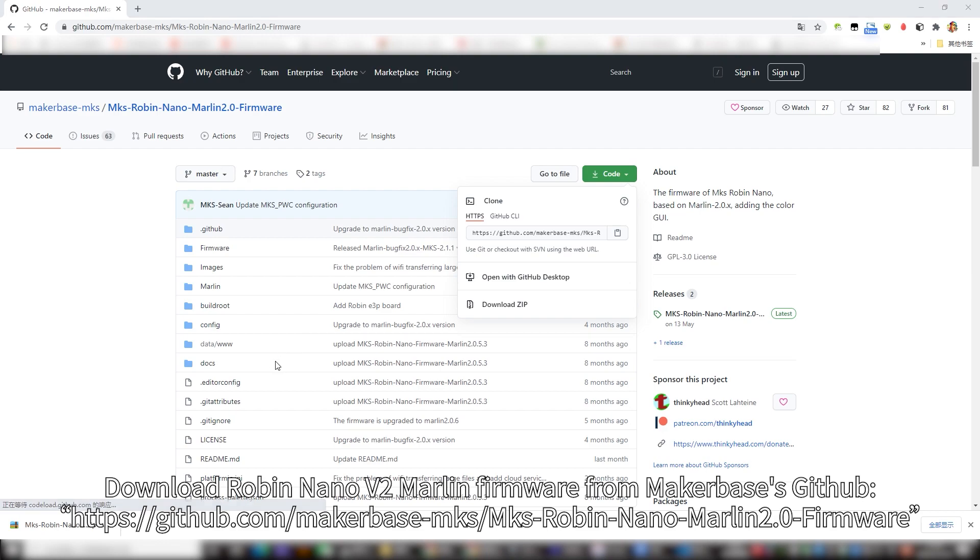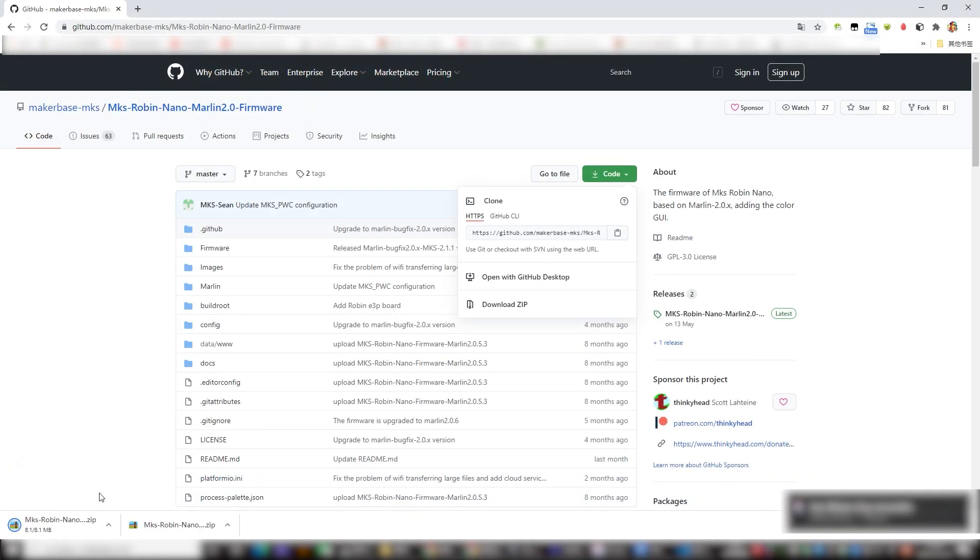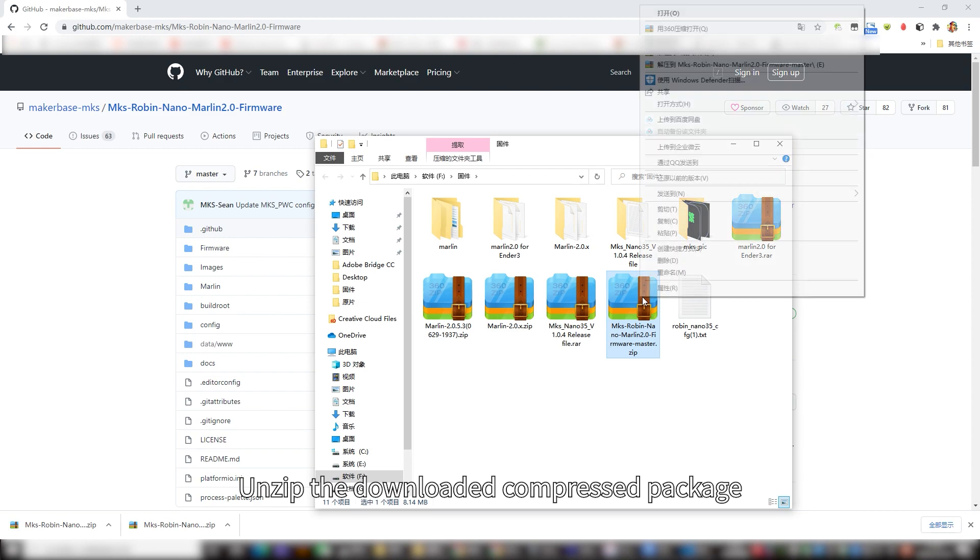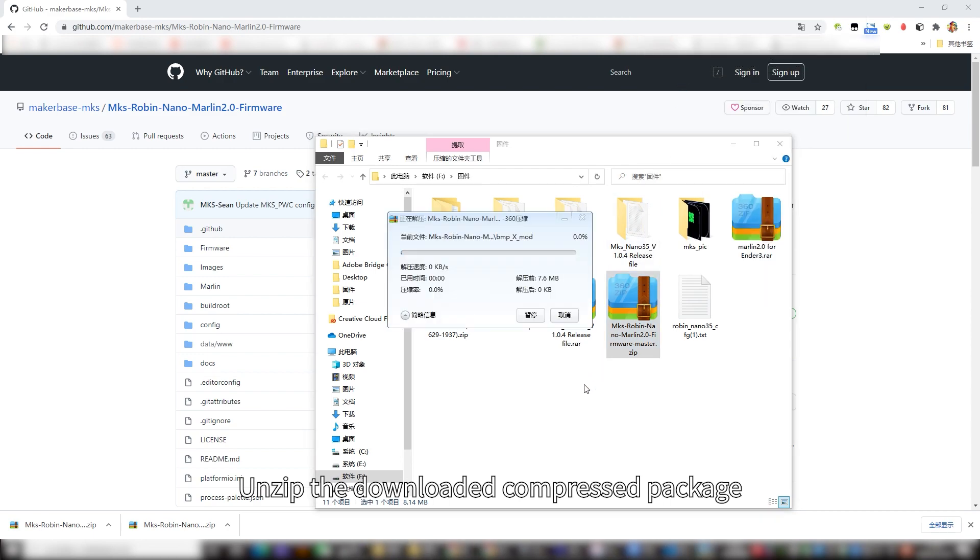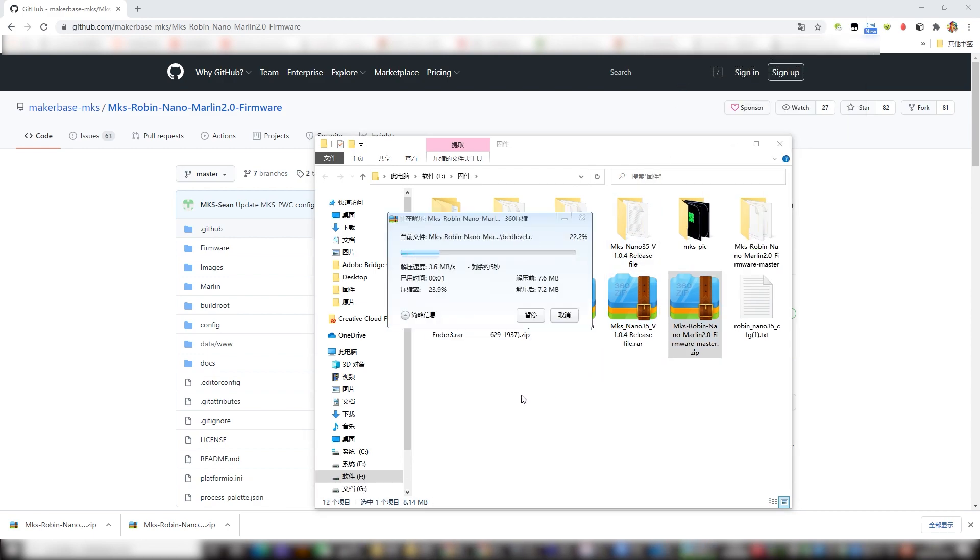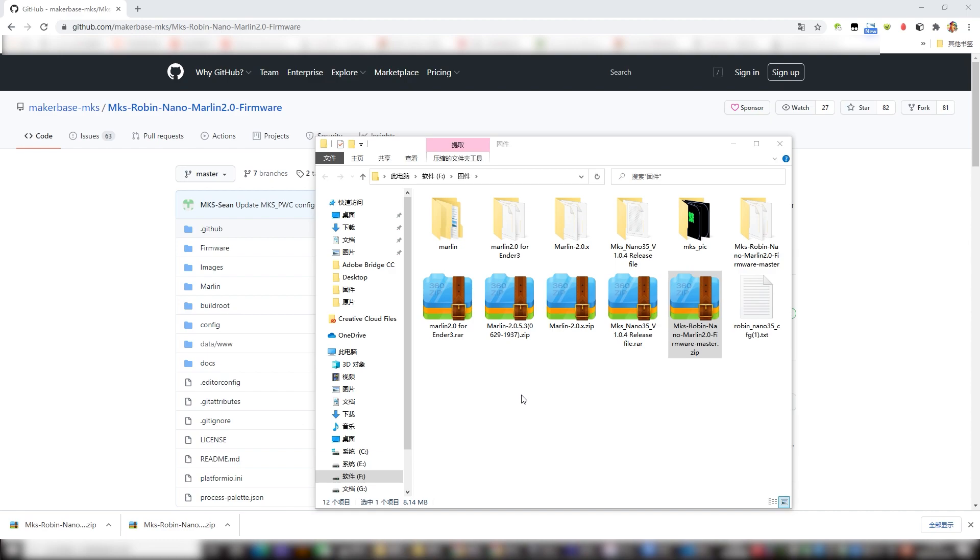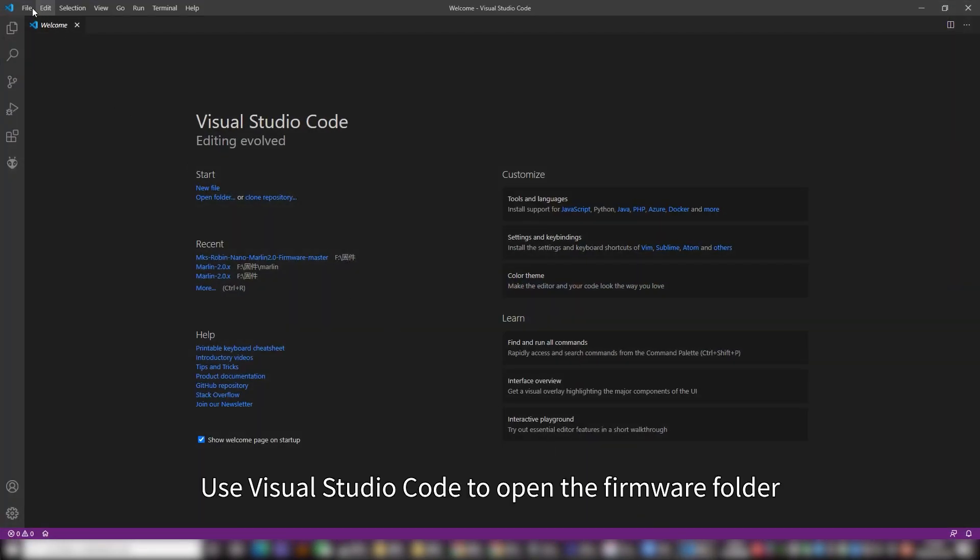Download Robin Nano V2 Marlin firmware from MakerBase GitHub. Unzip the downloaded compressed package.